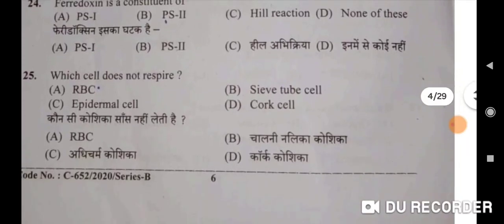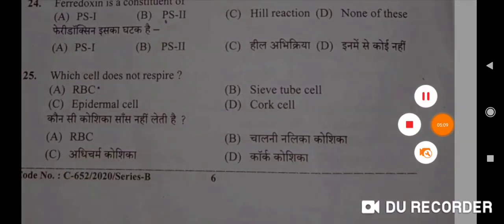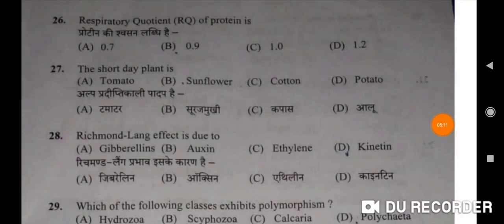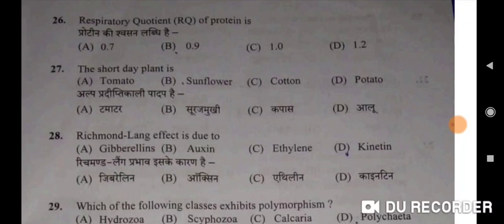Twenty-fifth: which cell does not respire? Cork cell will be the correct option D. Kaunsi koshika saans nahi leti hai — cork koshika. Twenty-sixth: respiratory quotient (RQ) of protein is 0.9 — B will be the correct option. Twenty-seventh: the short-day plant is cotton — C will be the correct option. Alp pradiptikali padap hai kapas. Next: Richmond-Lang effect is due to kinetin — D is the correct option.